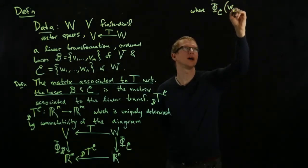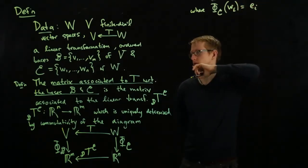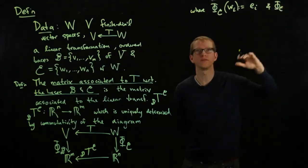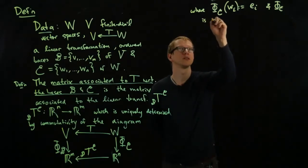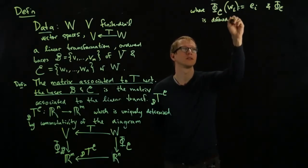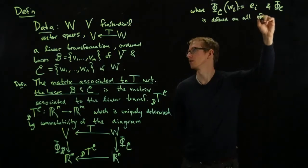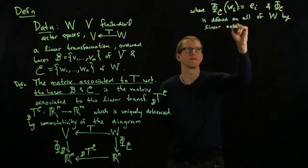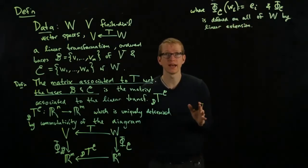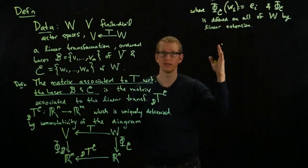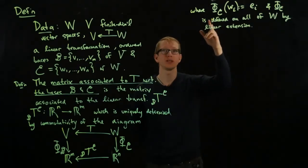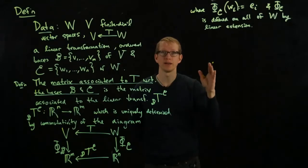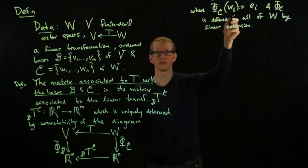So let me just define this where phi_C of, let's see, W_i equals E_i. That's the definition of this, and phi_C is defined on all other vectors, on all of W, by linear extension. Which means that for any vector, any vector is expressed as a linear combination of the W_i's, and as a result we can define what the image of that vector is under this linear transformation, by pulling out the constant factors and just looking at what it does to this basis.